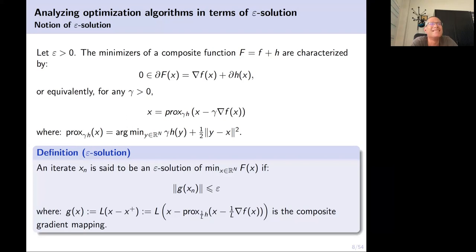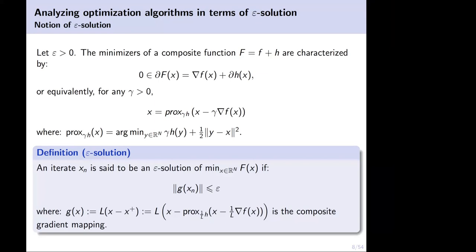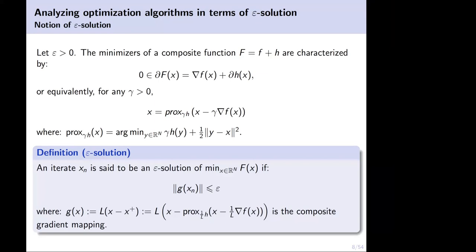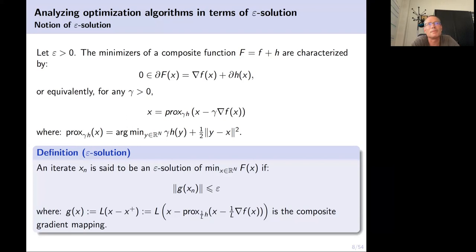For those unfamiliar with the subdifferential, just think of it as: 0 equals the gradient of F. The subdifferential for non-differentiable convex functions is a generalization of the classical gradient — instead of 0 = ∇F you have 0 ∈ ∂F, the set of subgradients.